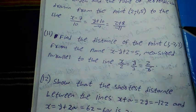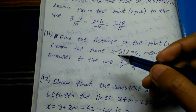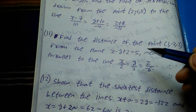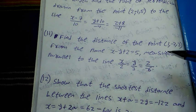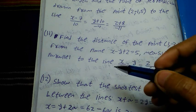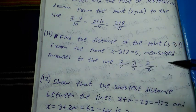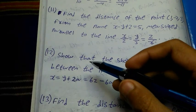Number 11 question: find the distance of the point (1, minus 2, 3) from the plane x minus y plus z equal to 5, measured parallel to the line x/2 equal to y/3 equal to z/(minus 6).